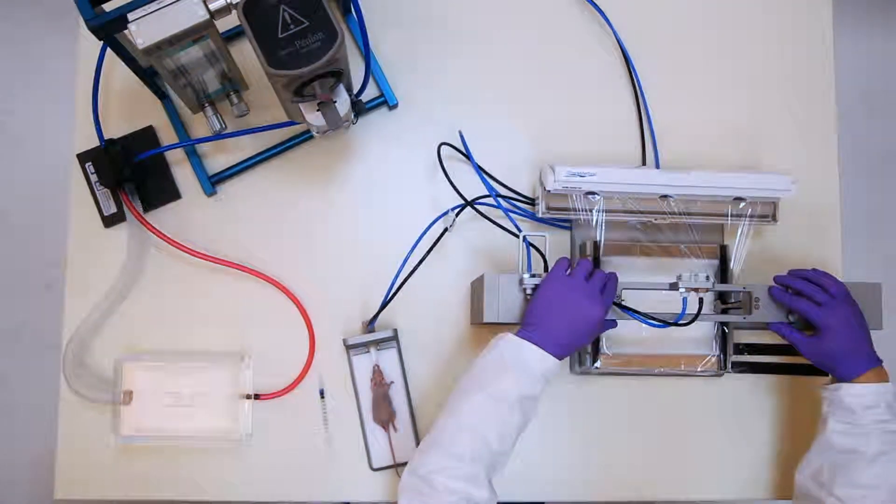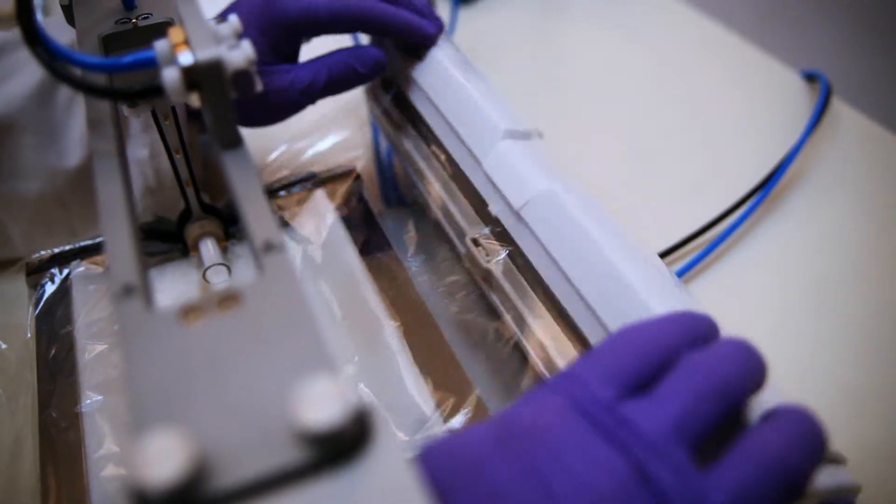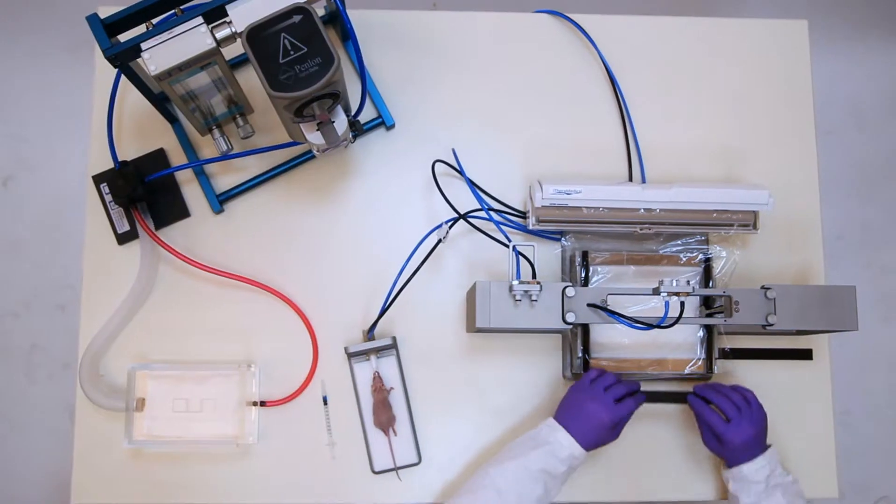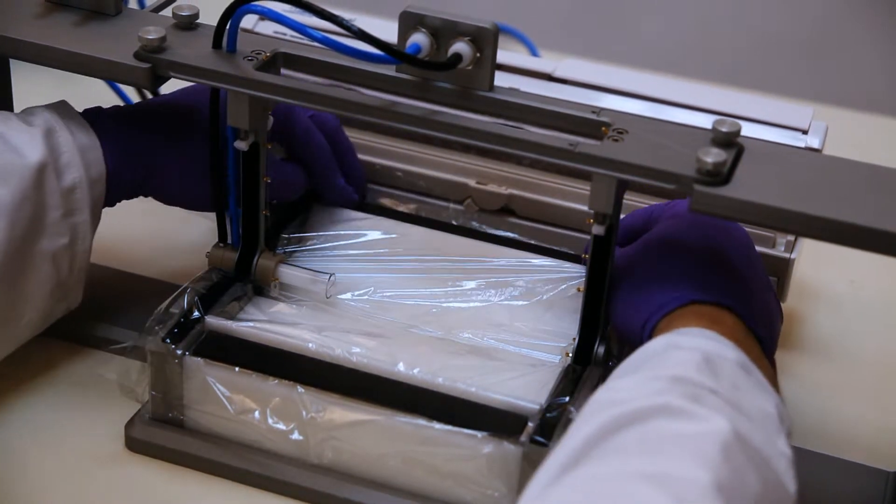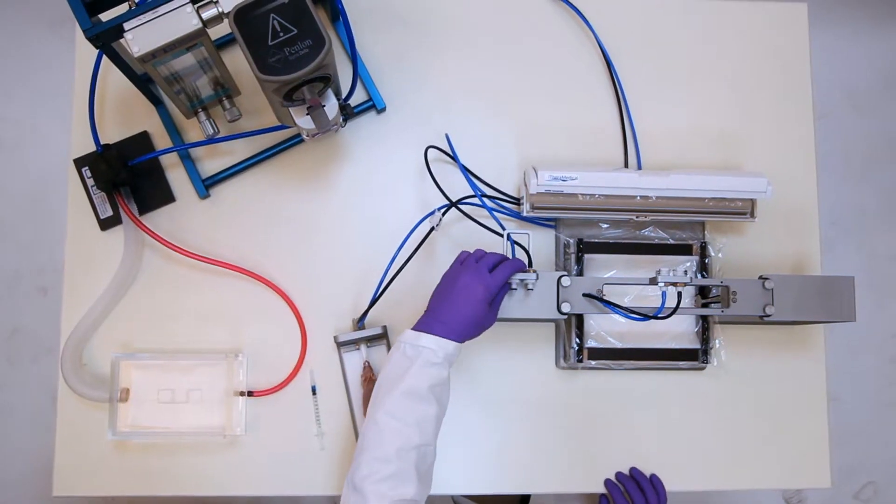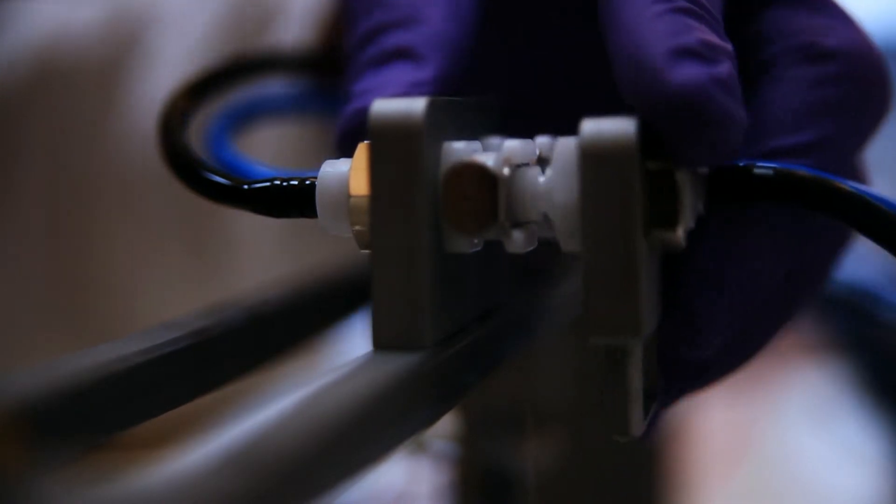The animal holder is placed into the preparation station and the membrane is attached to it. Anesthesia is then switched from the injection platform to the animal holder.